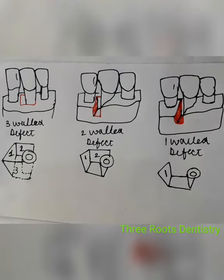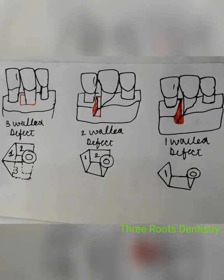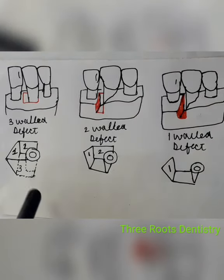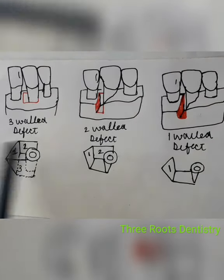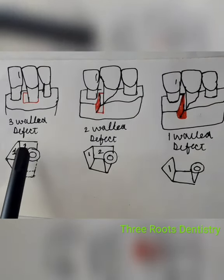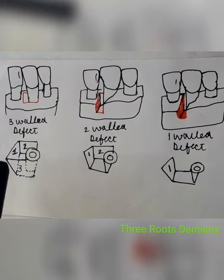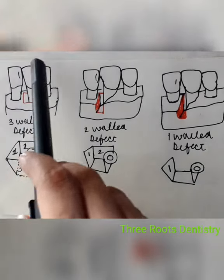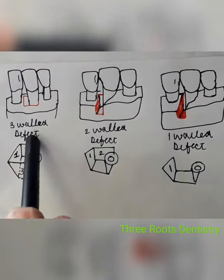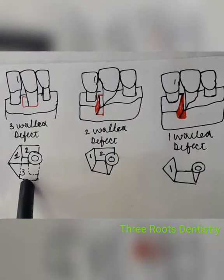Goldman and Cohen have classified the angular defects on the basis of the number of osseous walls remaining or present. In the first figure you can see this is the three-wall defect, which means three walls are present: this is the distal, this is the lingual wall, and this is the facial wall.